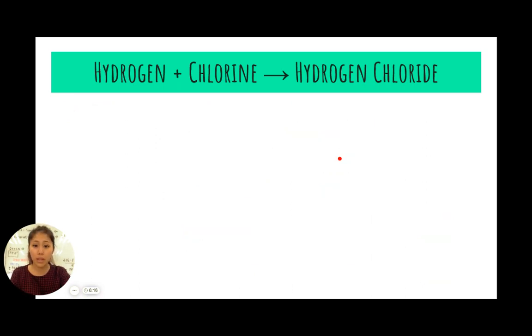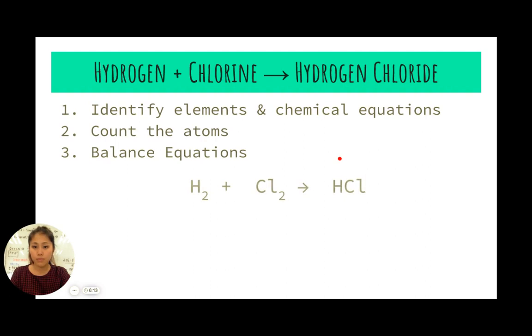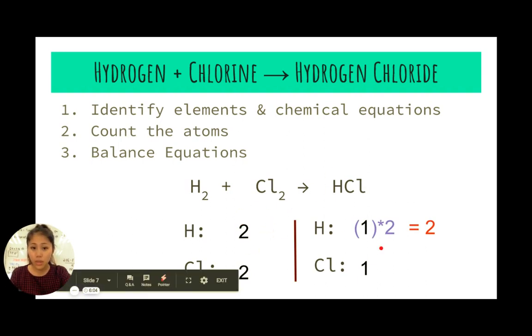Therefore, in order for us to balance this, we need to multiply. We have our reactants and our products like we have seen before. In order for us to get to two, we have to multiply. In balancing equations, there's not really any addition when you're balancing, there's only multiplication. So we can multiply this by two.